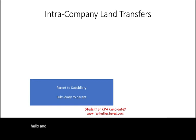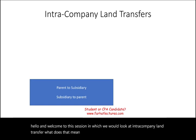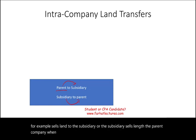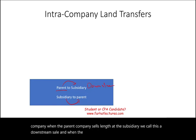Welcome to this session on intra-company land transfer. This refers to when one company — a parent company, for example — sells land to its subsidiary, or the subsidiary sells land to the parent. When the parent sells land to the subsidiary, we call this a downstream sale. When the subsidiary sells land to the parent, we call this an upstream sale.